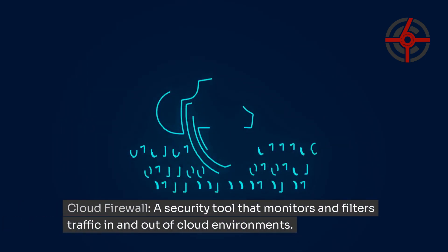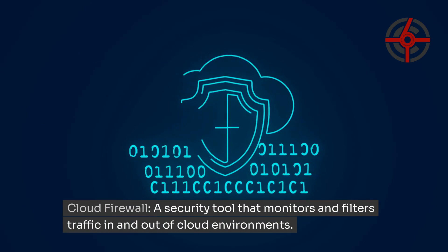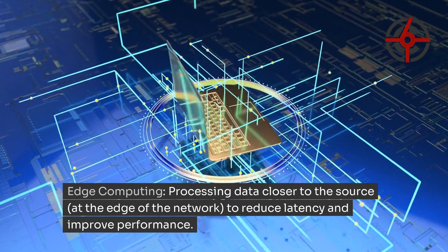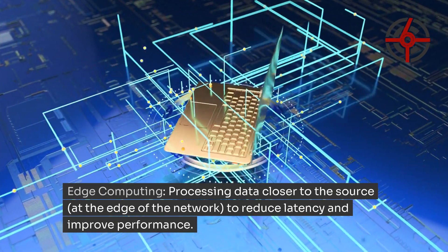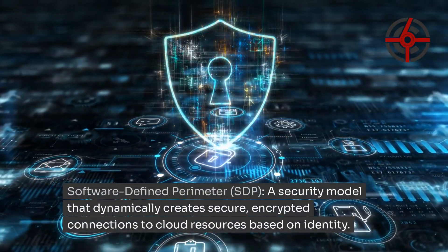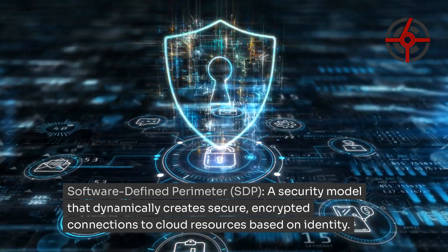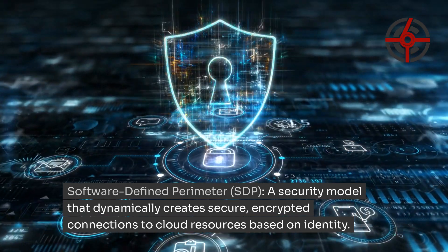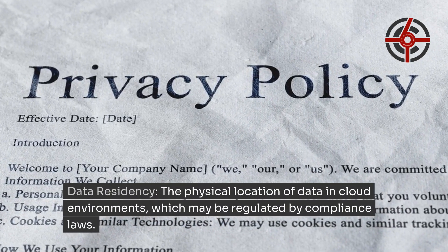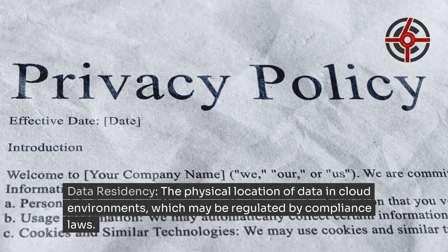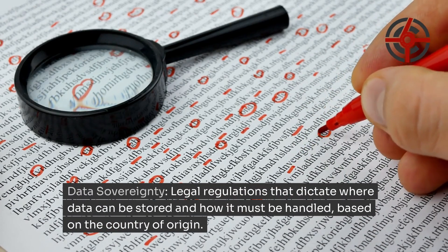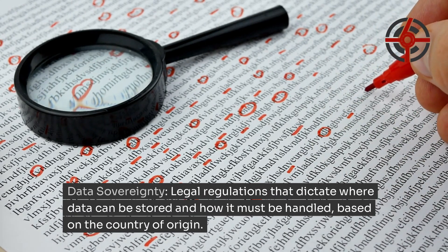Cloud Firewall: a security tool that monitors and filters traffic in and out of cloud environments. Edge Computing: processing data closer to the source at the edge of the network to reduce latency and improve performance. Software Defined Perimeter (SDP): a security model that dynamically creates secure encrypted connections to cloud resources based on identity. Data Residency: the physical location of data in cloud environments, which may be regulated by compliance laws. Data Sovereignty: legal regulations that dictate where data can be stored and how it must be handled, based on the country of origin.